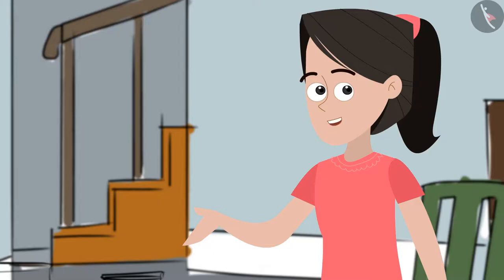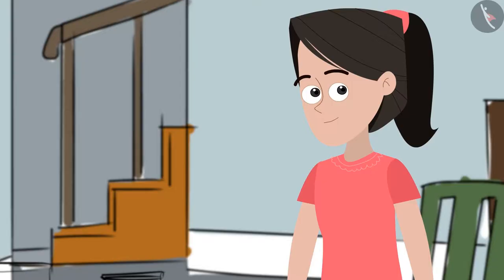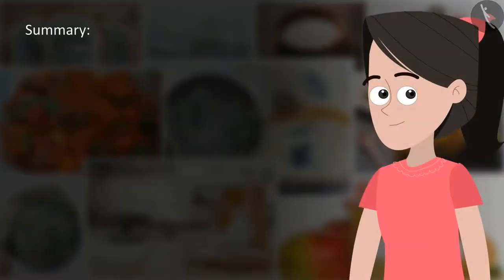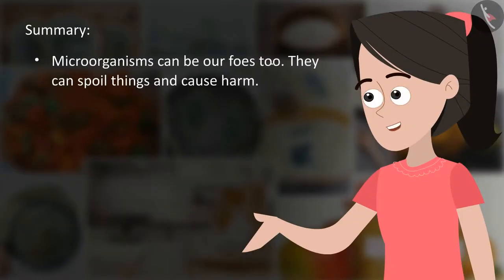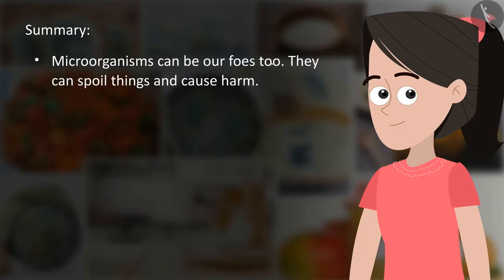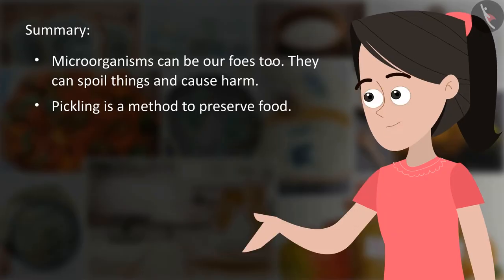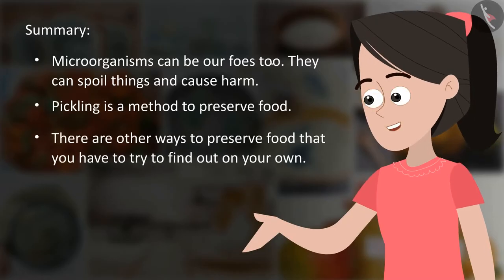Let us summarize our learning. Microorganisms can be our foes too — they can spoil things and cause harm. Pickling is a method to preserve food. There are other ways to preserve food that you have to try to find out on your own.